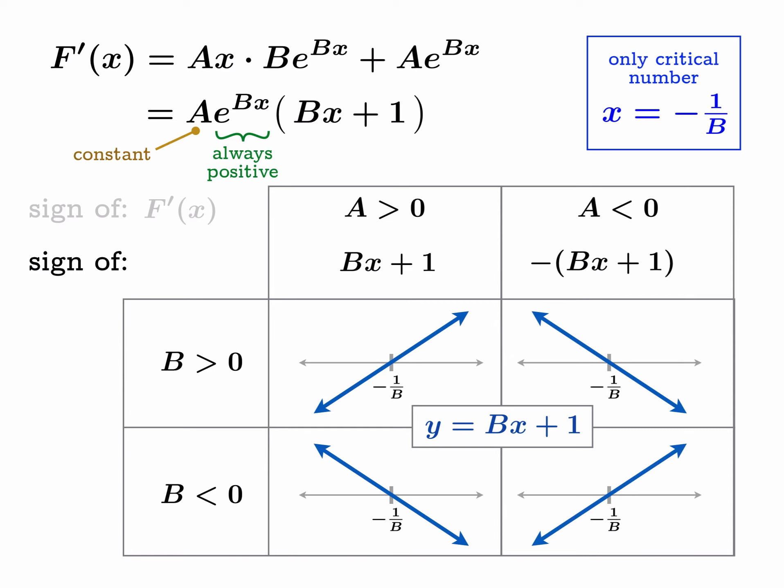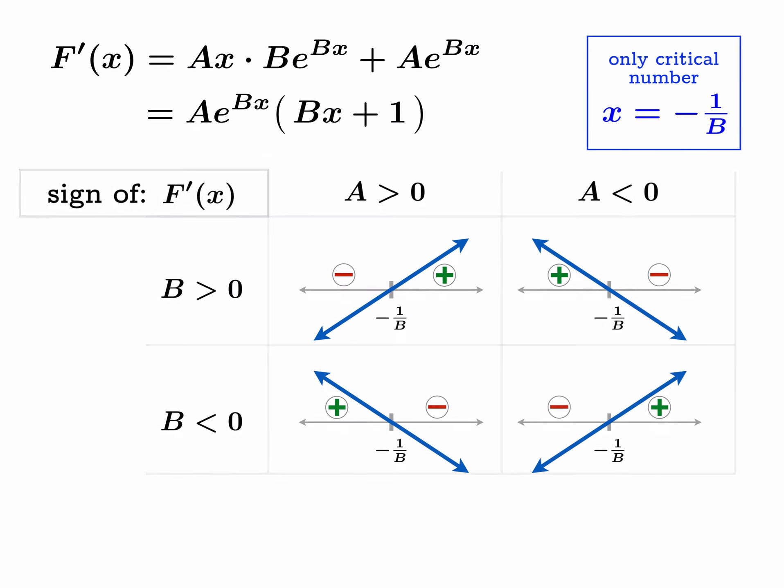The sign analysis now is pretty easy. Here we can tell we're going from negative values of Bx + 1 to positive values, and the analysis for the other linear functions is much the same. There's our analysis of the sign of Bx + 1 or opposite of Bx + 1. We've actually analyzed the sign of f'(x) itself.